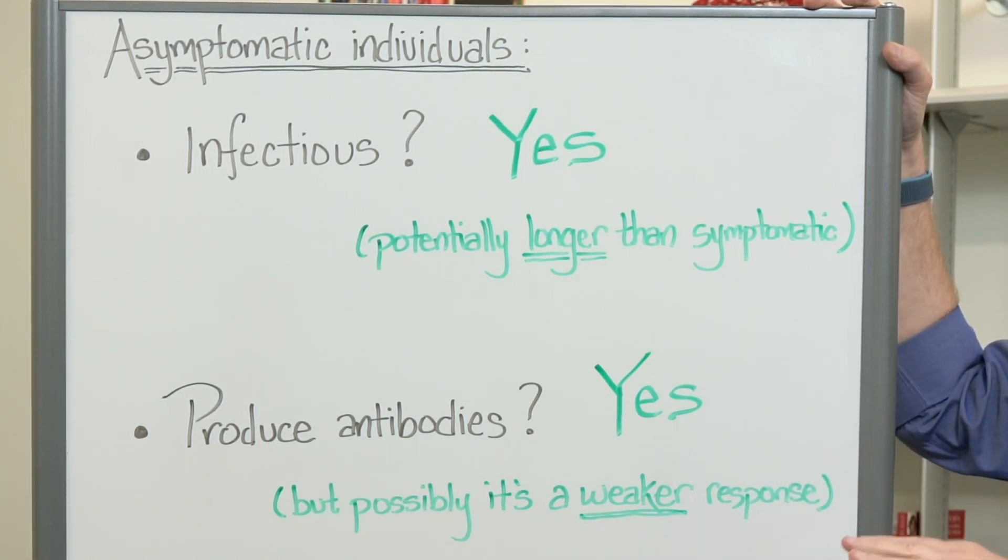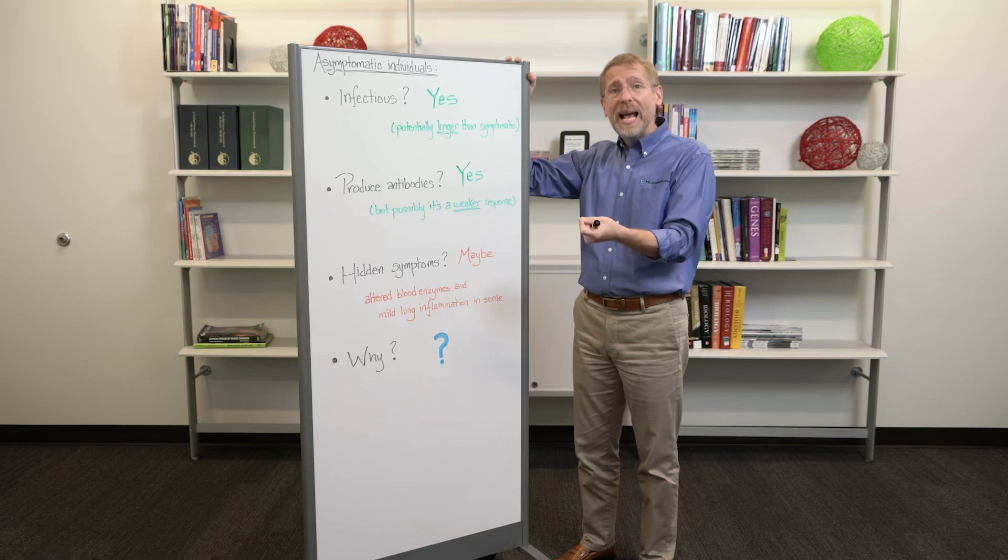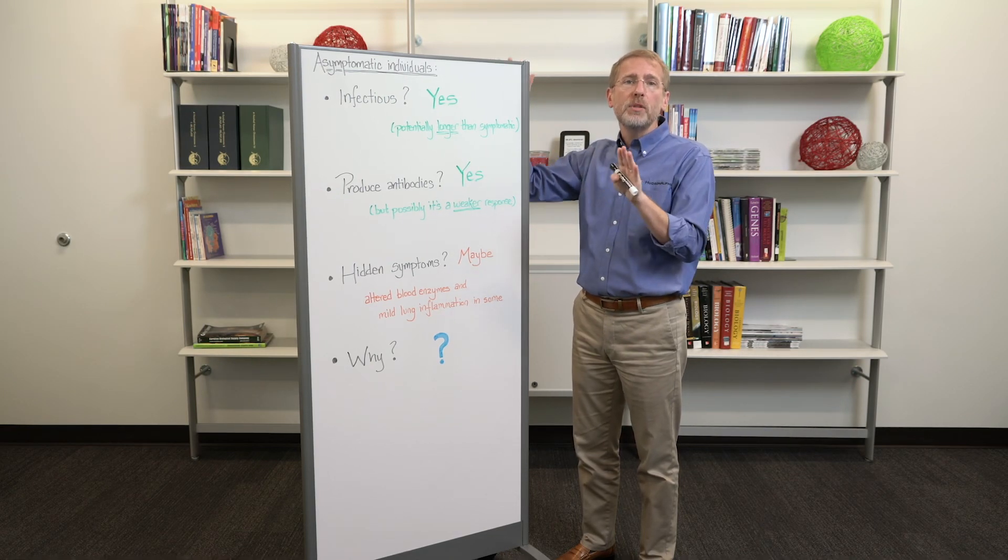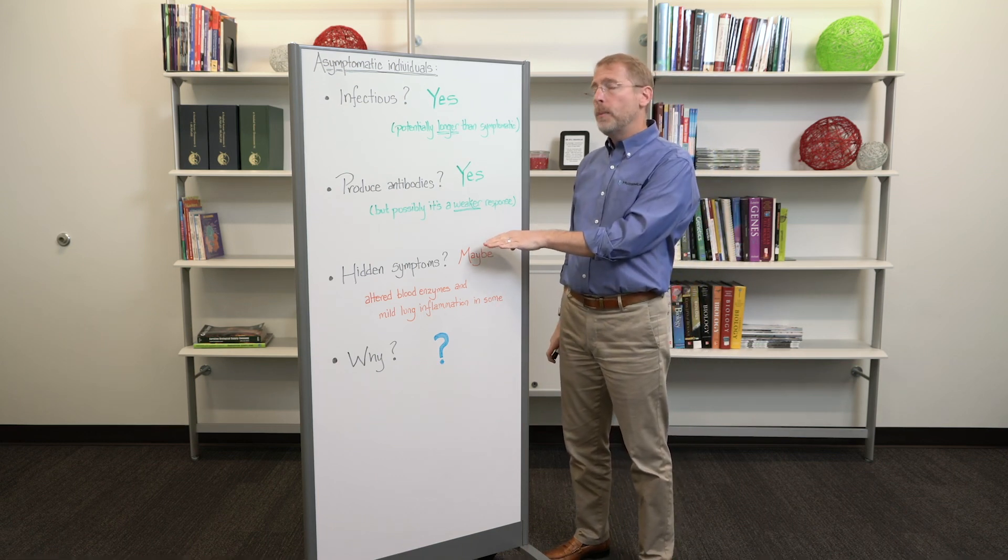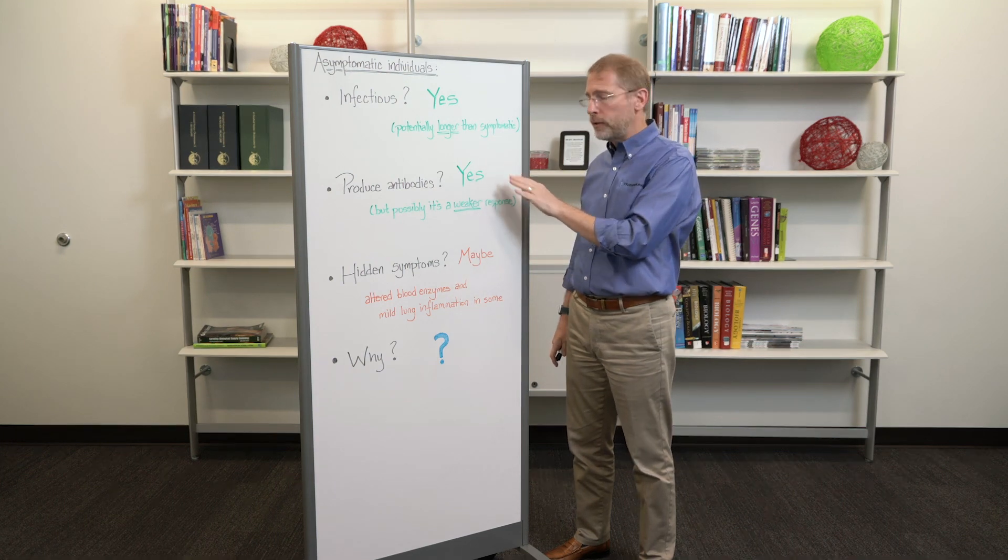Again, it's a small study, but a small study of a group of individuals from Asia found that potentially asymptomatic individuals produced a weaker antibody response. It seemed to drop off more rapidly than symptomatic individuals. We don't yet know what this means for long-term immunity, but we're going to say yes with an asterisk.